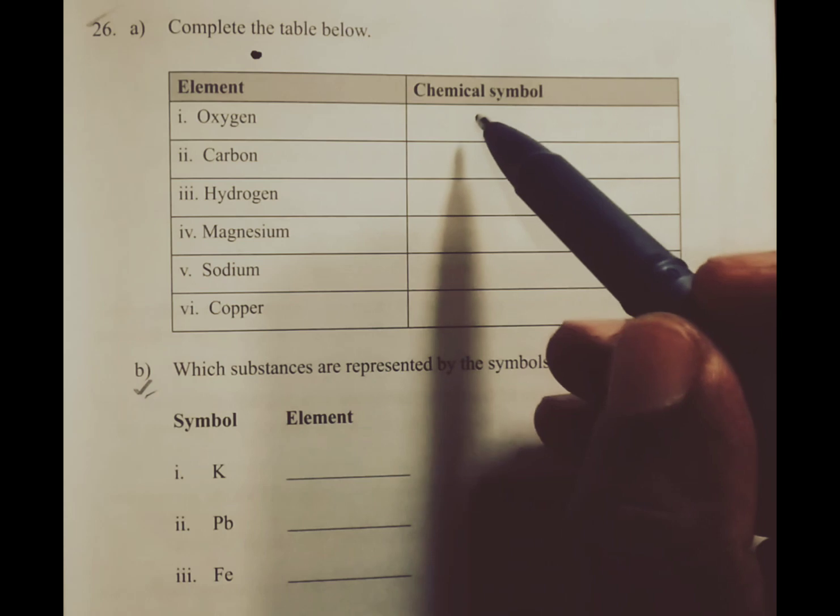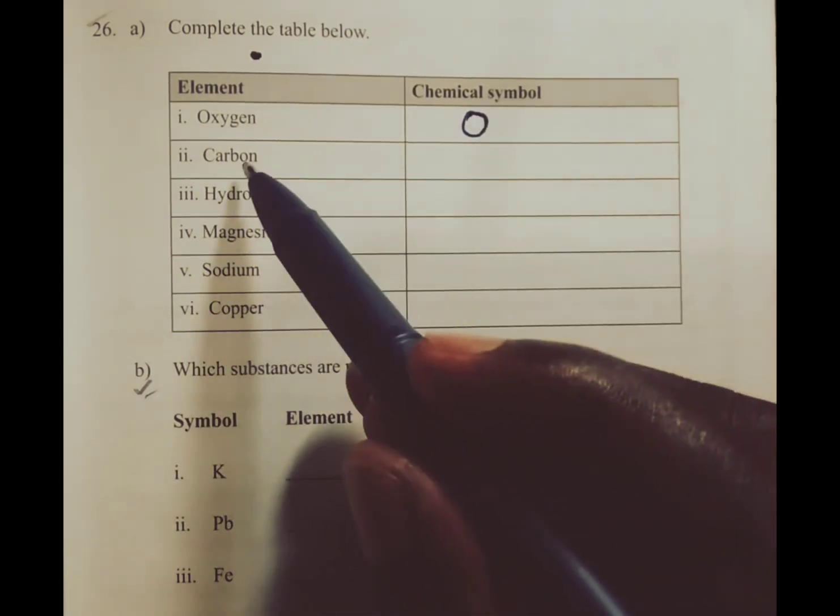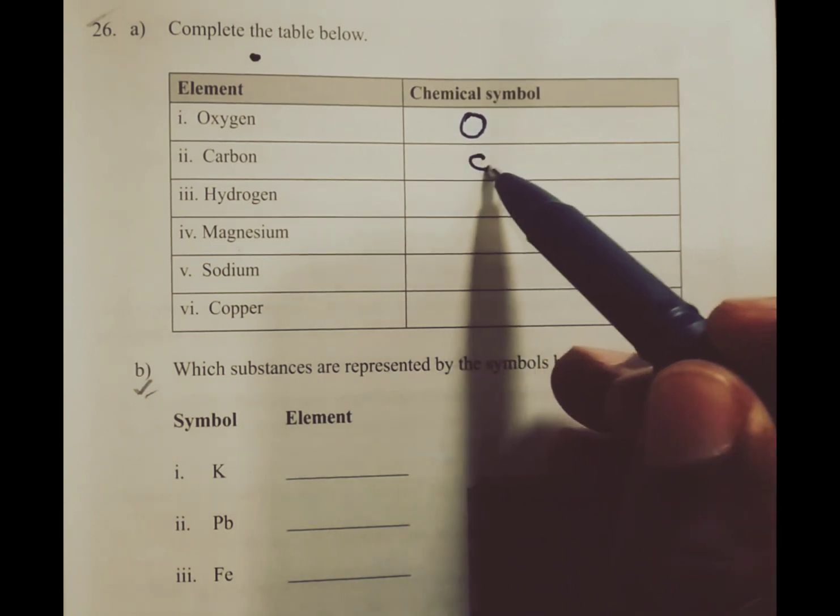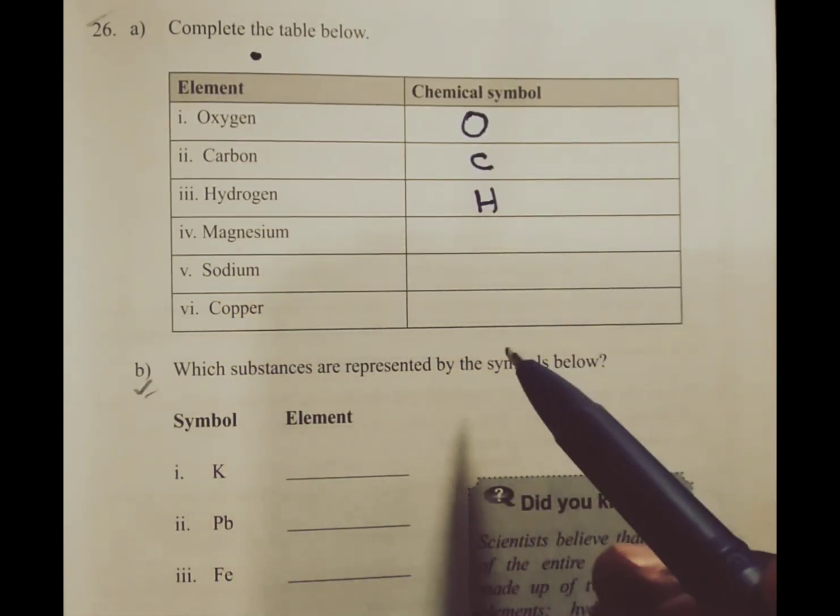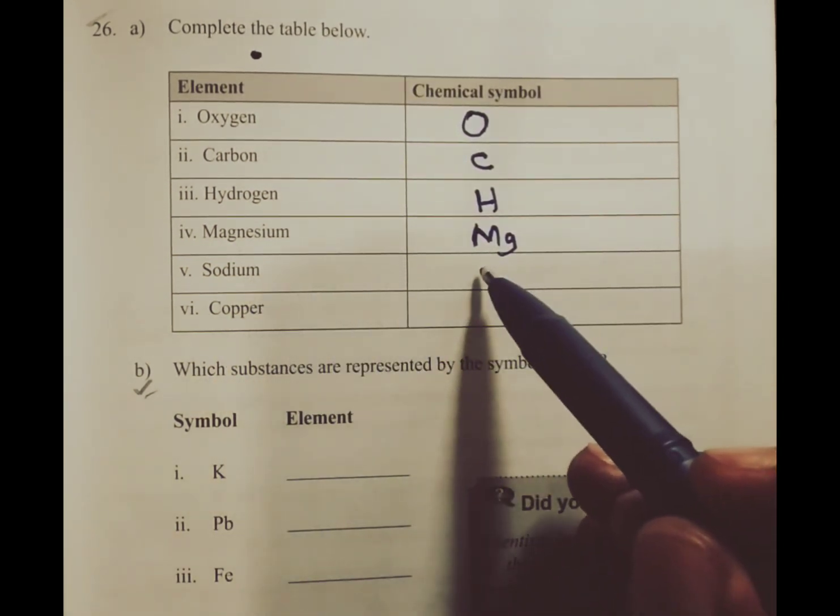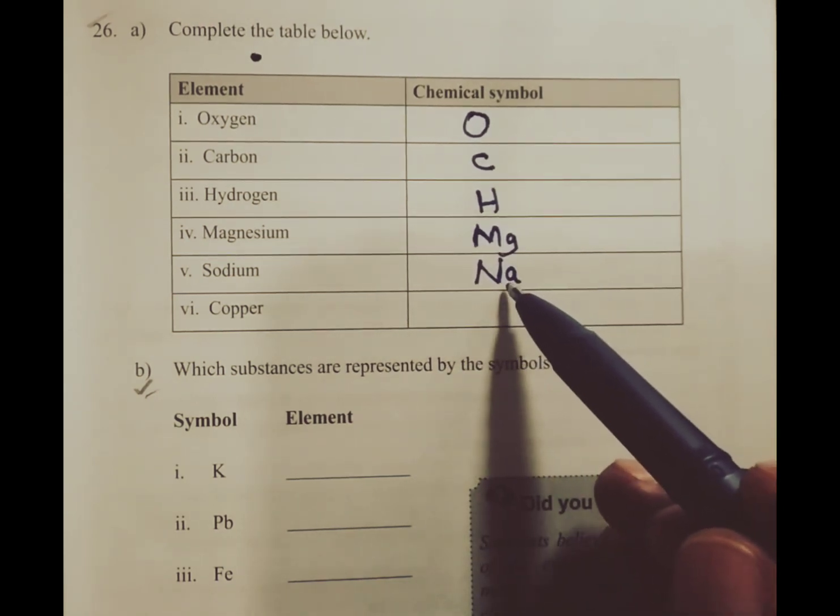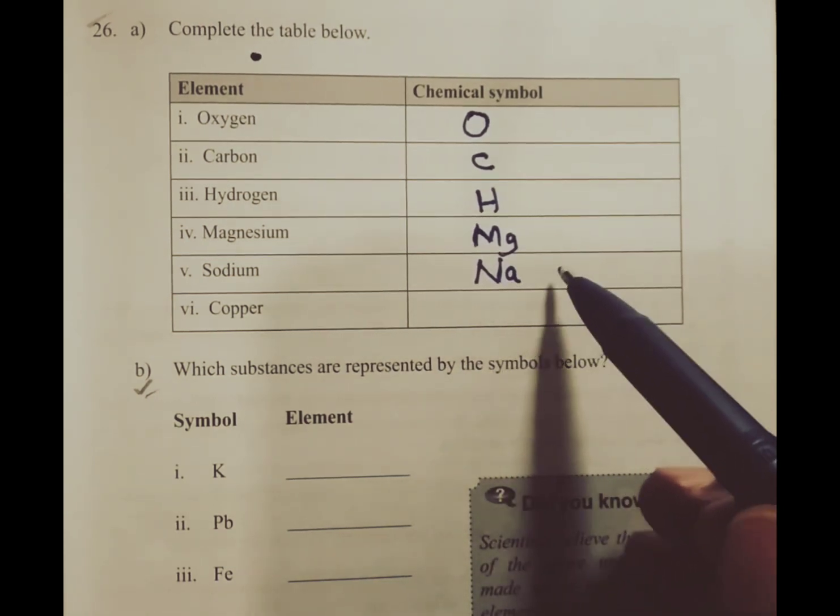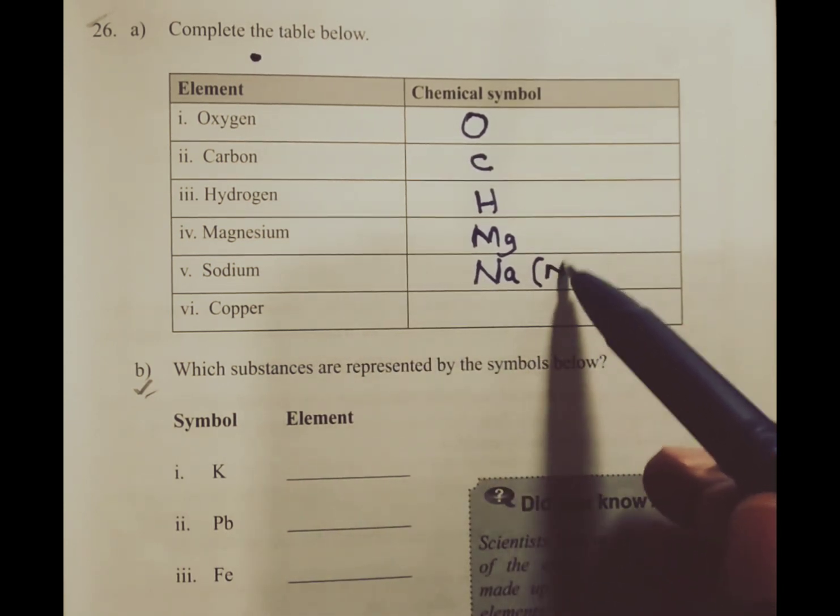We have oxygen and the chemical symbol for oxygen is O. The chemical symbol for carbon is C. That of hydrogen is H. That of magnesium is Mg. That of sodium is Na. Na is the chemical symbol of sodium which is derived from the Latin name for sodium which is Natrium.